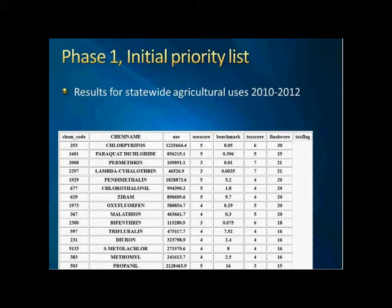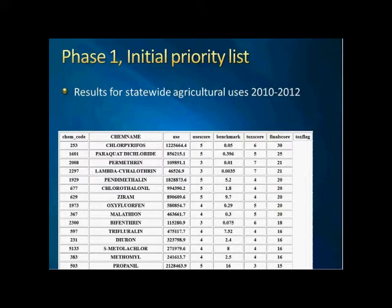As you can imagine, it's a very long list. The graphic shows the top 10 or more pesticides. Essentially, the result is a list of pesticides ordered by the parameter called the priority score, which is the product of the use score and the toxicity score. Most of the data columns are straightforward. For example, we have the chemical code and chemical name, the annual use data in pounds, the use score derived from the use data, and the toxicity benchmark and toxicity score based on the benchmark, plus the final score. The toxicity flag is a column reserved for the data source of the toxicity data.